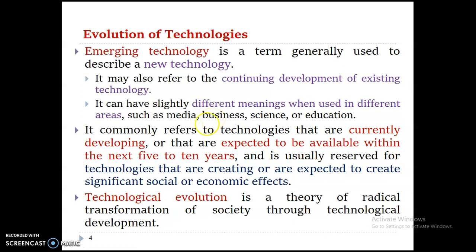The second concept is technological evolution. Technological evolution refers to a radical transformation of a society through pseudo-technological development. Whenever a society transforms from manual production to machine production through technology, that radical transformation is what we call technological evolution. Simply put: whenever a society shifts from manual production to machine production through technology, that is technological evolution.